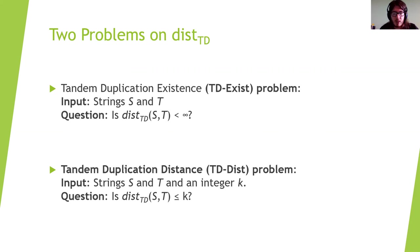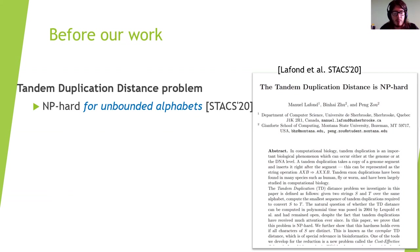The tandem duplication distance problem, TD-dist, takes as input the strings s and t and an integer k, and asks if the dist_td between s and t is less than or equal to k — so if we can go from s to t in no more than k duplications. Before our work, the tandem duplication distance problem was shown to be NP-hard for unbounded alphabets by LaFond, meaning that if the alphabet can be as large as we want, the problem is NP-hard.